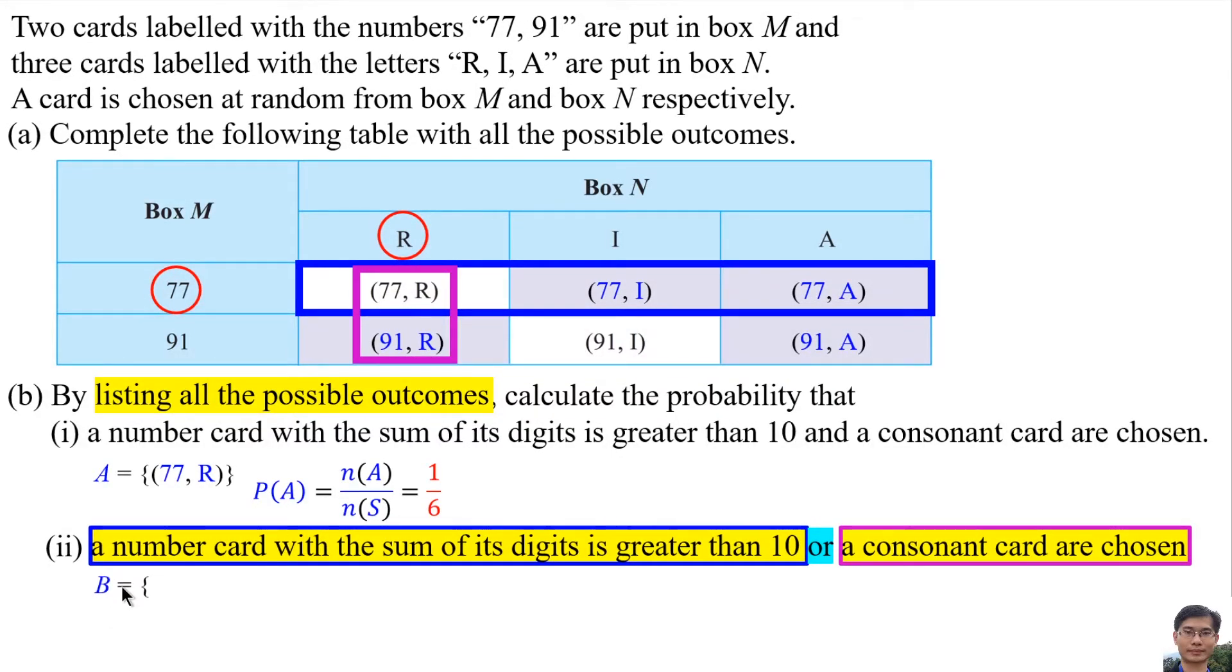Let B represent these 2 events. So the possible outcome are 77, R, 77, I, 77, A and 91, R.